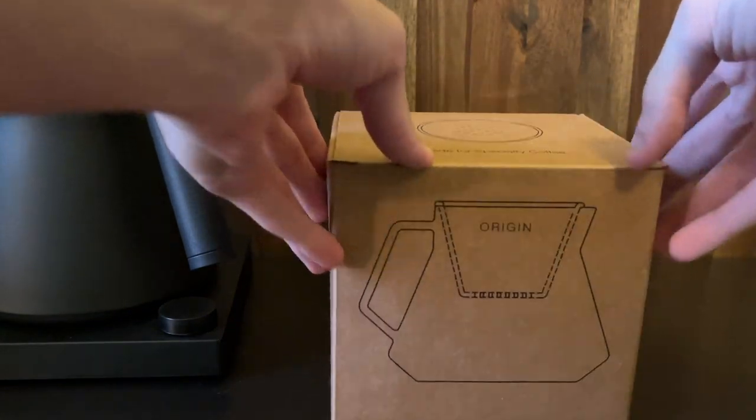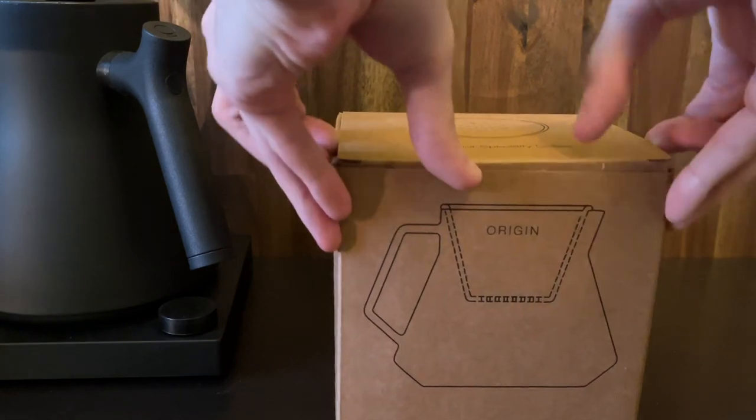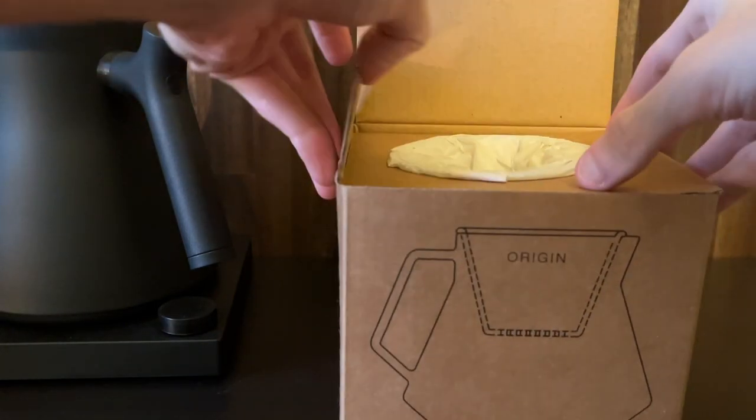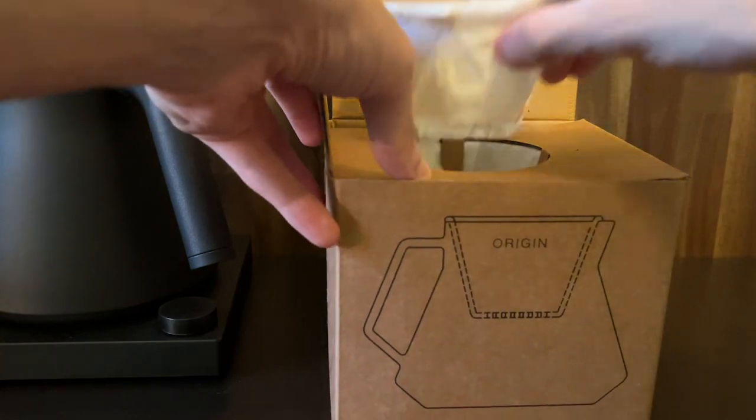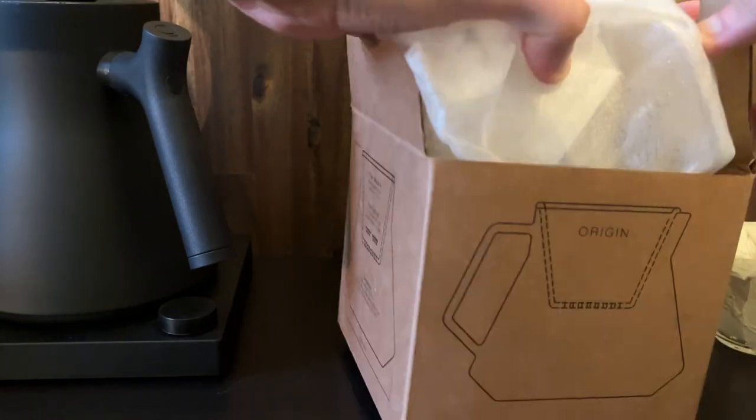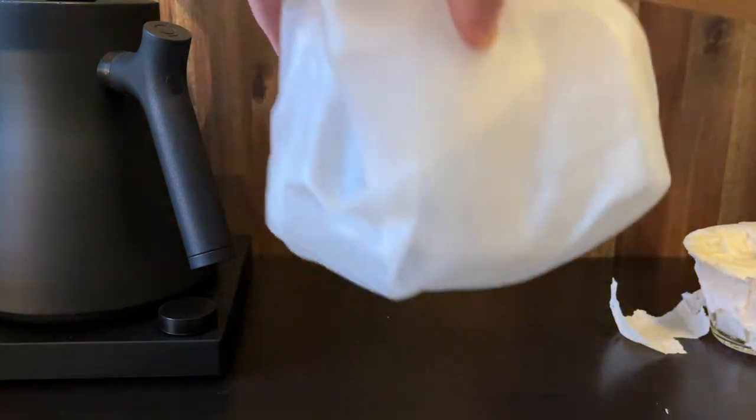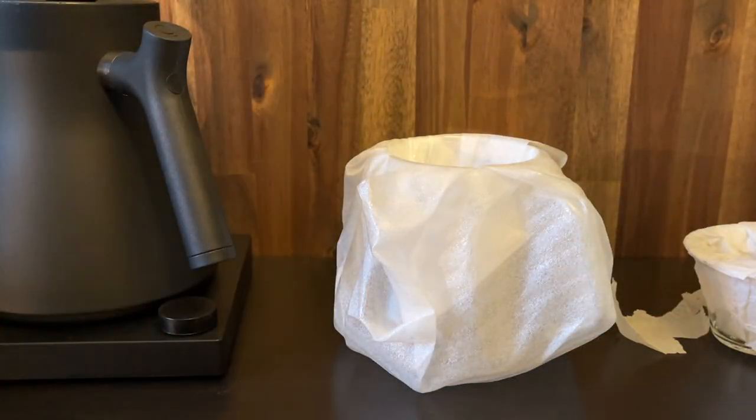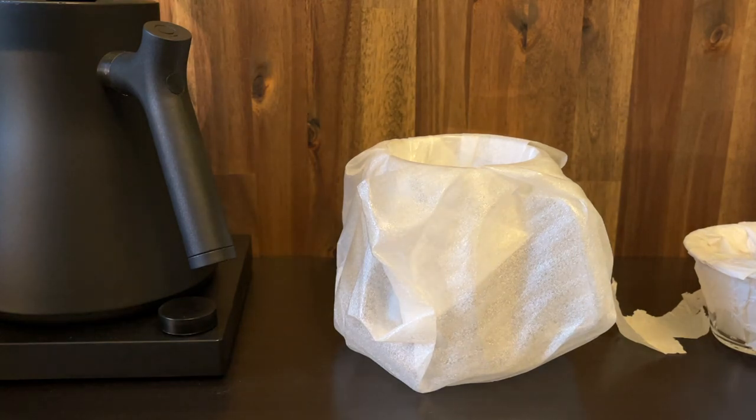So this top piece just opens up, the dripper pops out just covered in some tissue paper followed by the server itself. Just pop that box to the side.